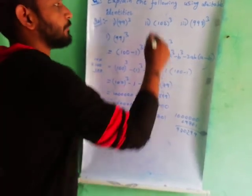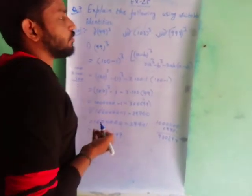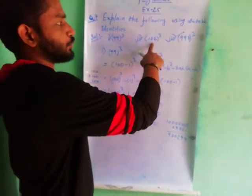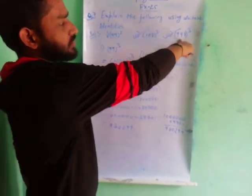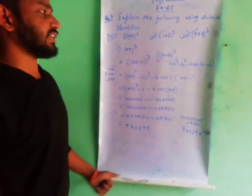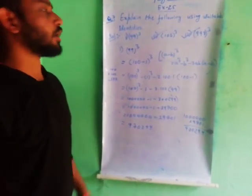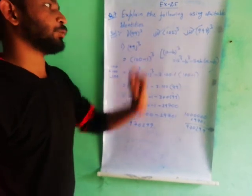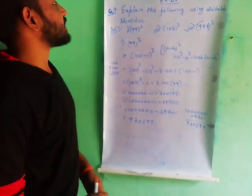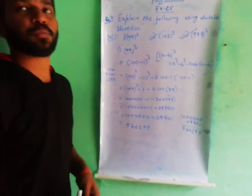In the similar way, you can do the second and third problems — do those as homework in classwork. The second one is (100 + 2) whole cube and the third one is (1000 - 2) whole cube. By using (A - B) whole cube and (A + B) whole cube, you can solve the remaining two problems. Next video, we will discuss question number 8 and 9 in exercise 2.5.